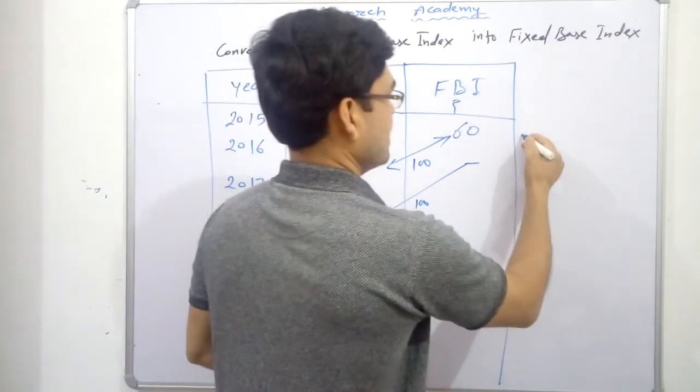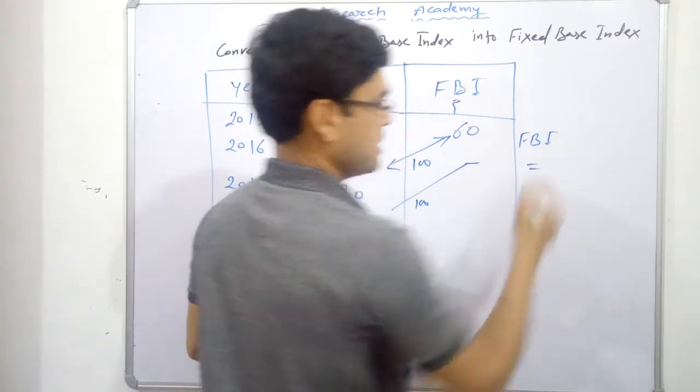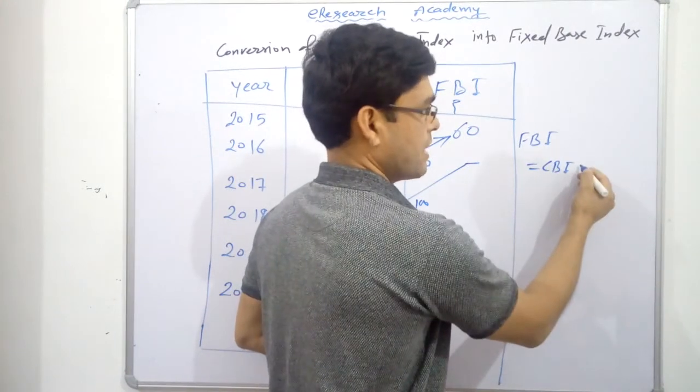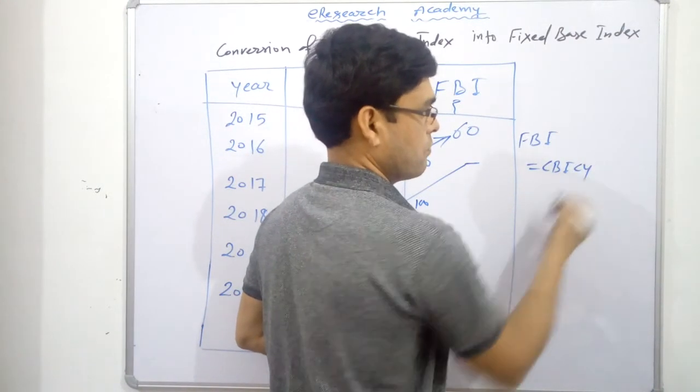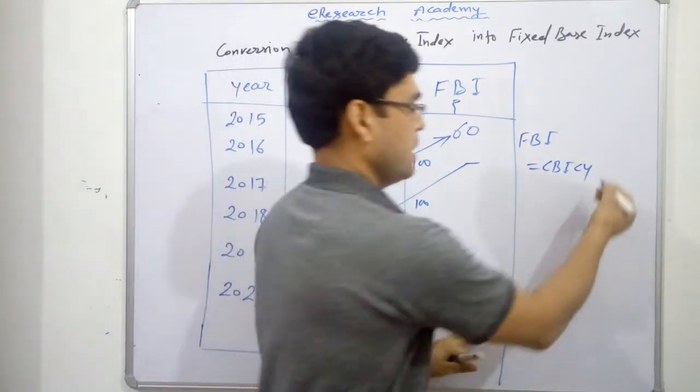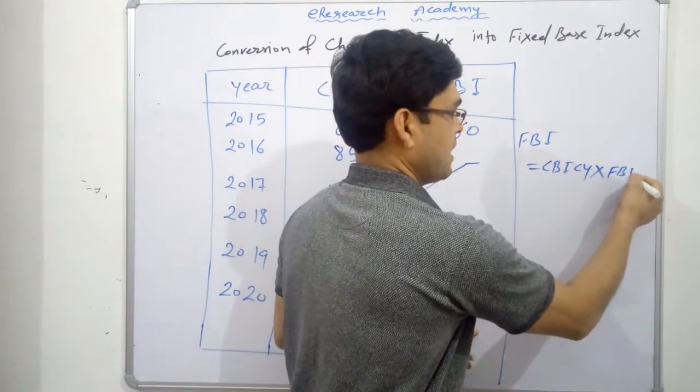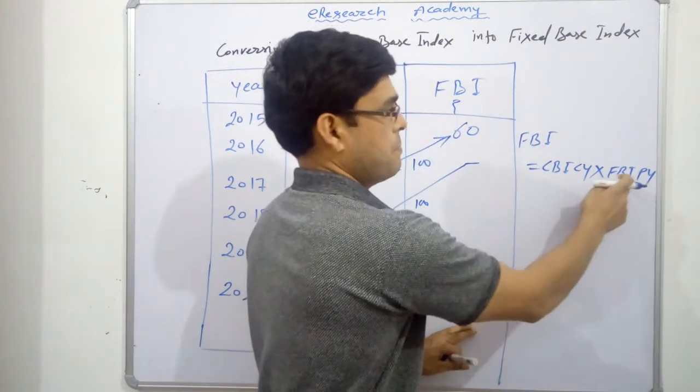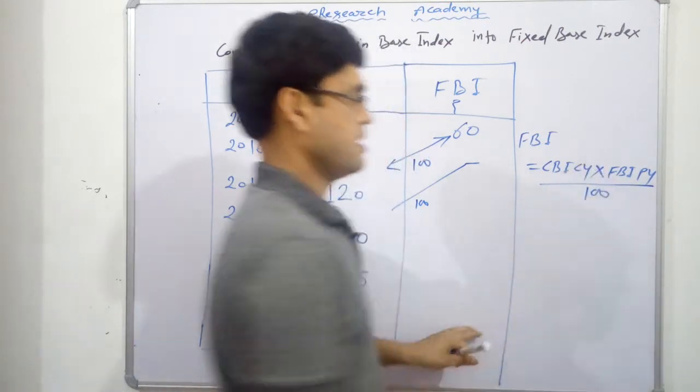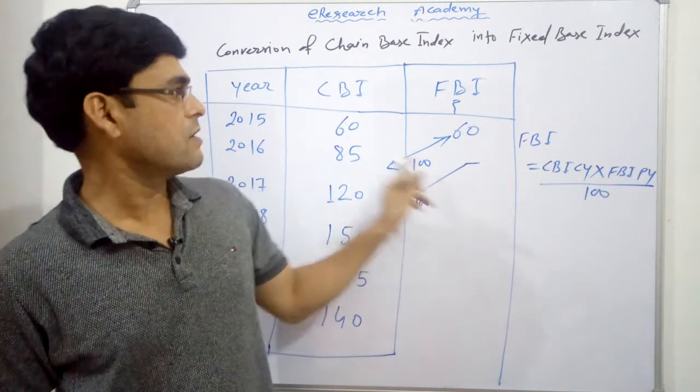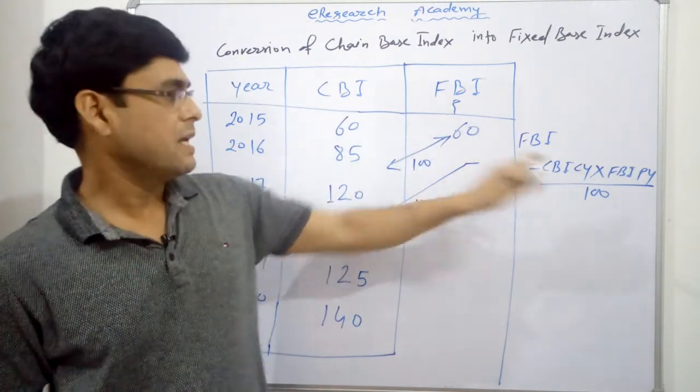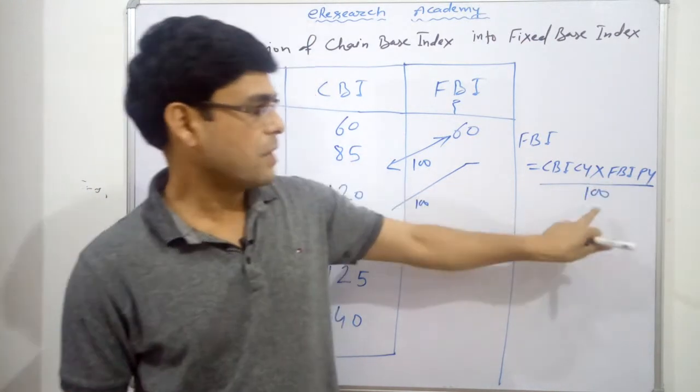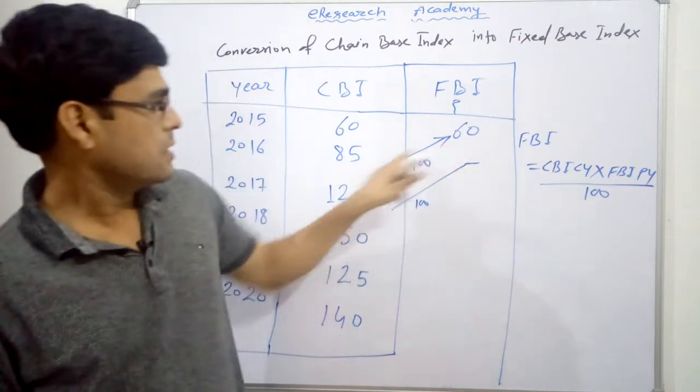In the formula, fixed base index is equal to what? Chain base index CBI for current year, into FBI, fixed base index for previous year, upon 100. So this is the formula to convert CBI into FBI. CBI for current year, into FBI for previous year, upon 100.